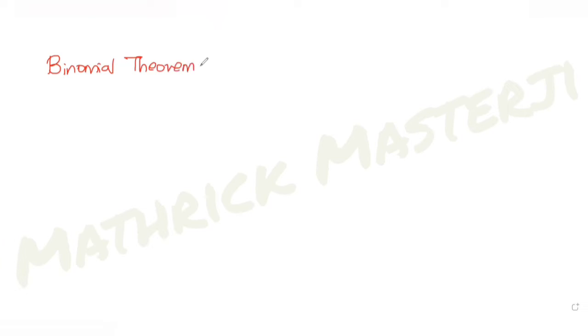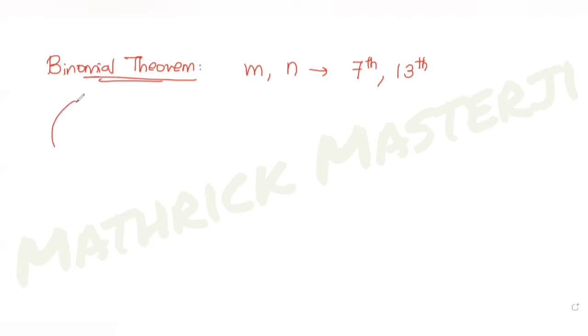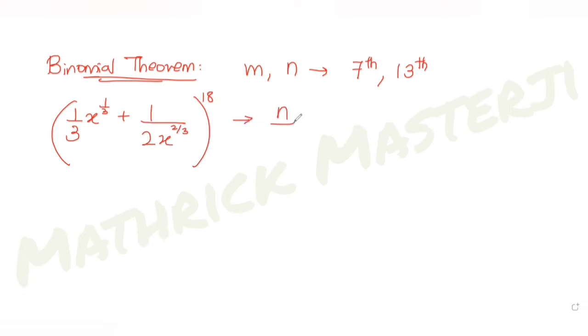Today's question is from the topic of binomial theorem. The question tells us: let m and n be the coefficients of the 7th and 13th terms respectively in the expansion of (1/3 · x^(1/3) + 1/2 · x^(2/3))^18. The question asks us to find the value of (n/m)^(1/3).